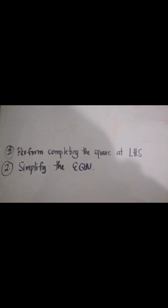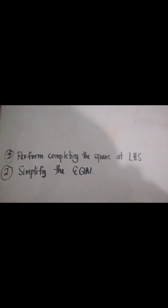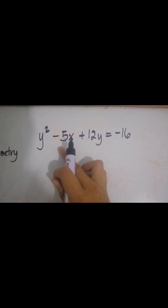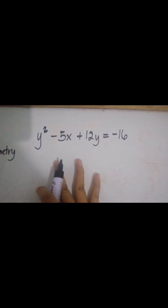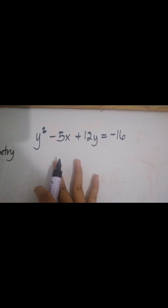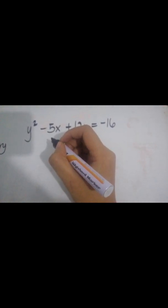To transform this into the standard equation of the parabola, there are two steps. First, perform completing the square on the left-hand side. Second, simplify the equation. Before we can perform completing the square, we must transfer negative 5x to the right-hand side, so that only y squared plus 12y remains on the left.